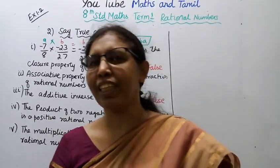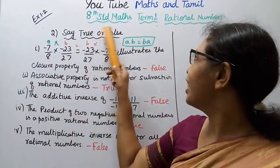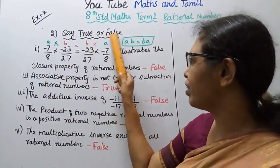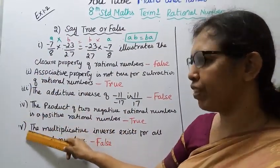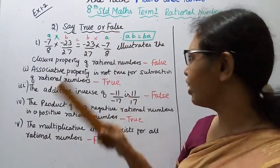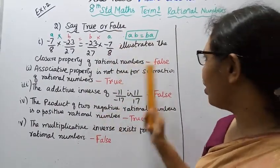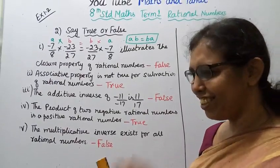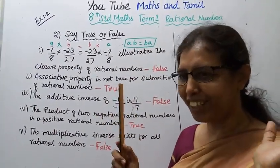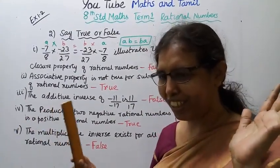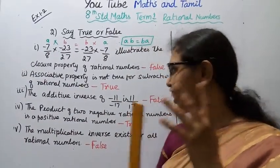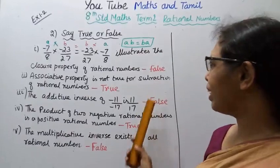Hello students, welcome to Max and Tumble channel. It's Standard 8 Maths - Rational Numbers Exercise 1.2. This section covers True or False questions. There are five subdivisions. The answers are: False, True, False, True, False. Let's go through each one and understand why.